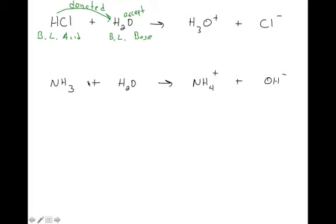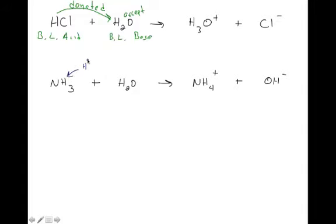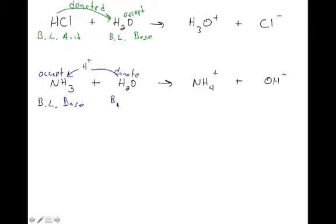In the ammonia reaction, NH3 goes from NH3 to NH4⁺ — it had to bring in a hydrogen ion from the water, so it's accepting. That makes ammonia the Bronsted-Lowry base. The water donated that hydrogen, so water is the Bronsted-Lowry acid in this reaction.